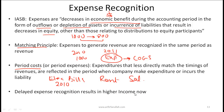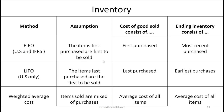Delayed expense recognition results in higher income now. If a company tries to delay expense recognition — even though it is spending cash — by creating an asset out of that transaction and expensing it later, that is one way companies can inflate income in the short run. We will see this in more detail in a later reading.